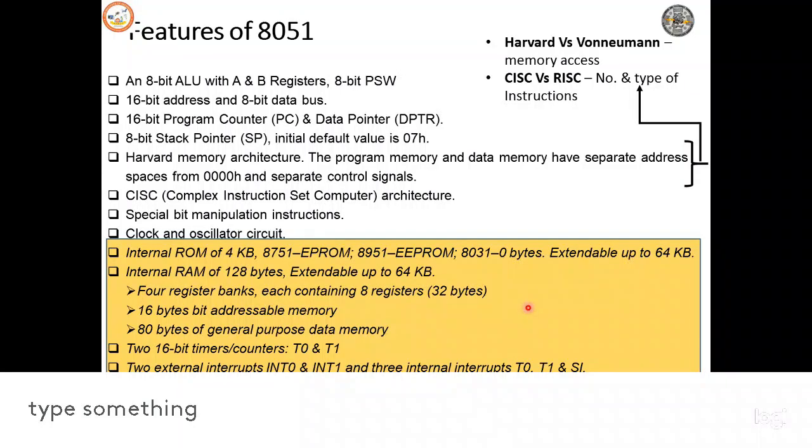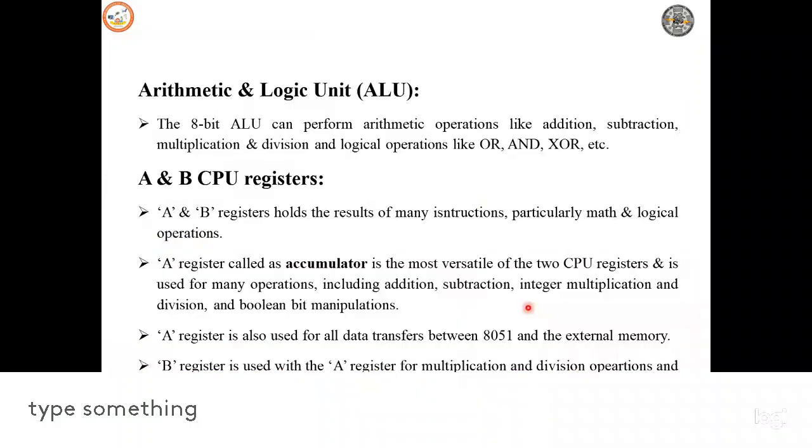It is having one arithmetic and logical unit. With the help of this arithmetic and logical unit, you can perform addition, subtraction, multiplication, division and logical operations like OR, AND, XOR. A and B CPU registers, these are all belongs to the special function register, that is accumulator A and register B. These are all used whenever it is required.